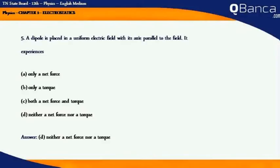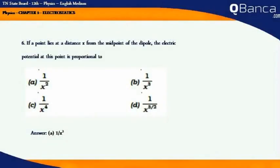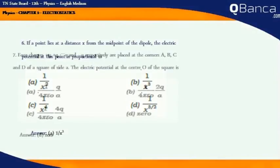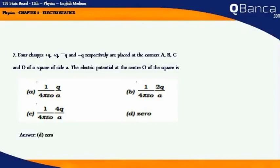A dipole is placed in a uniform electric field with its axis parallel to the field. It experiences neither a net force nor a torque. If a point lies at a distance x from the midpoint of the dipole, the electric potential at this point is proportional to. Answer: 1 by x squared.